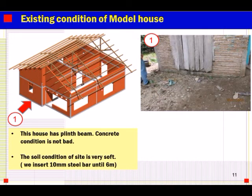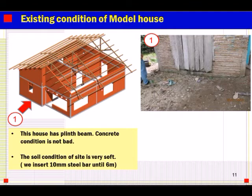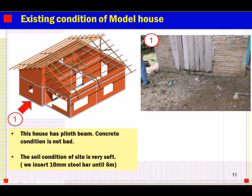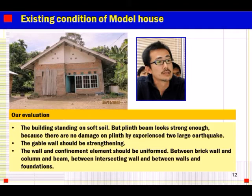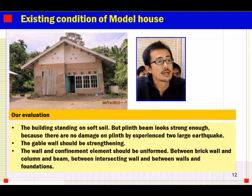There is a ring beam at foundation level. This house has a ring beam. The concrete condition is not bad. But the soil condition of the site is very soft — we tried to insert a 10mm steel bar and could insert it until 6 meters, confirming very soft soil. This building is standing on soft soil, but the ring beam looks strong enough because there is no damage on the ring beam from experiencing the large earthquakes.